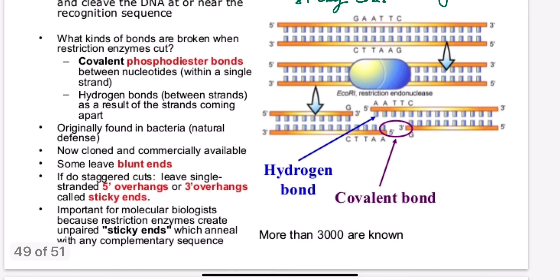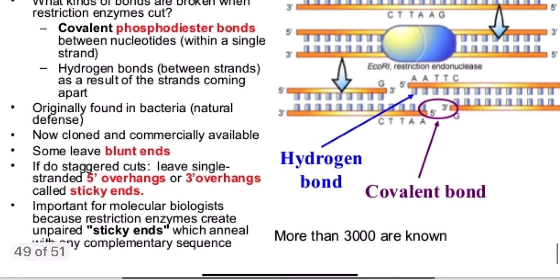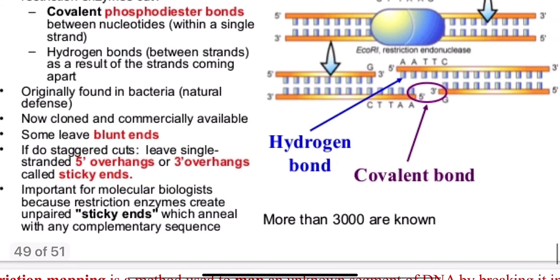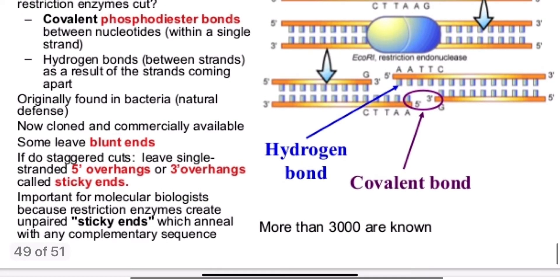So it's important for molecular biologists to create these unpaired sticky ends and then they can anneal or glue them back together with any complementary sequence in a different organism's DNA. Now, today, we know of more than 3,000 types of restriction enzymes.